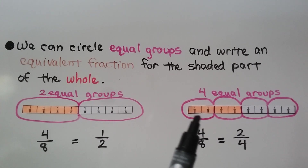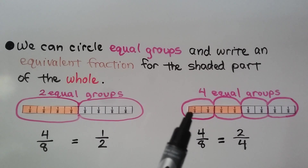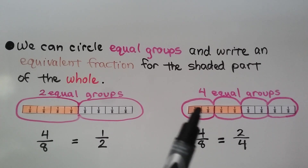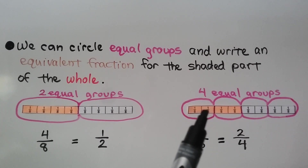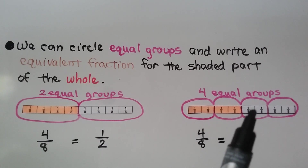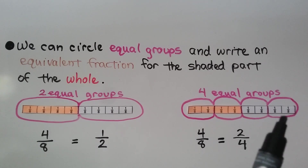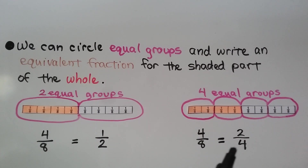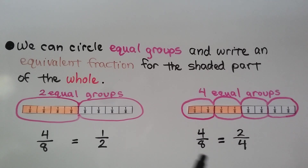Here we've got a fraction strip of eighths. We've got four-eighths shaded in — one, two, three, four. And we can put them into four equal groups, two in each one. We can say two of the four equal groups are shaded in. We can say four-eighths is equal to two-fourths.